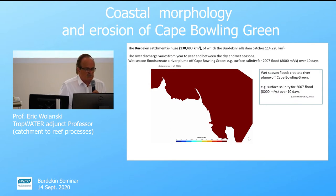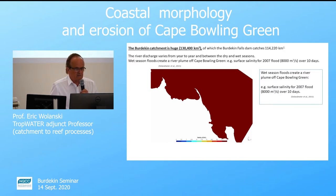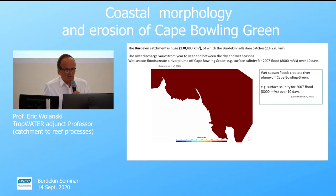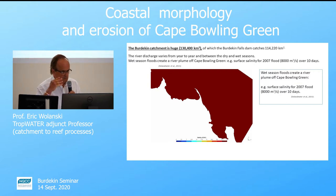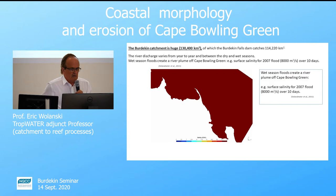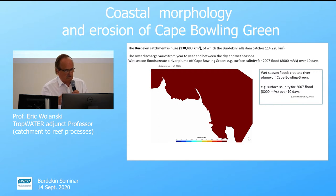The river catchment of the Burdekin is huge — 130,000 square kilometres, of which the Burdekin Falls dam catches 114,000, so most of it. It has a river discharge which varies from year to year and between the dry and wet season.